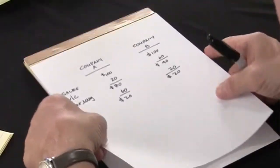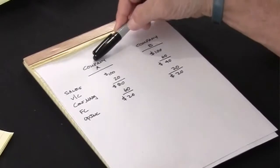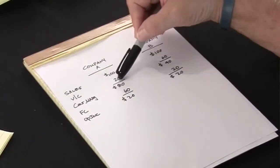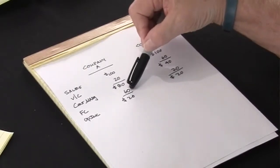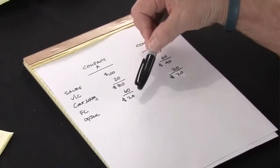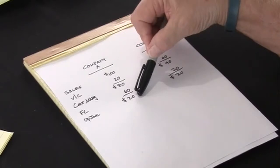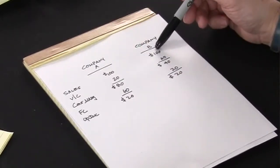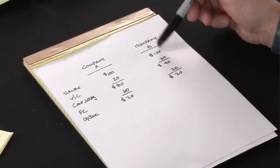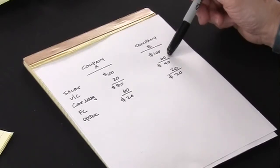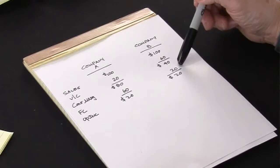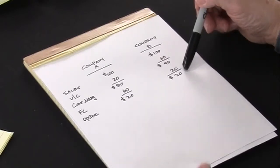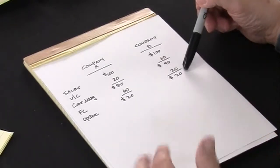For example, I've got two companies here. Company A sells $100 worth of product, of which $20 of their costs are variable, yielding a contribution margin of $80 with a fixed cost of $60, and its operating profit is $20. Similarly, Company B sells $100 worth of product, $60 worth of variable cost, $40 of contribution margin. Its fixed costs are only $20, and therefore its profit level is also $20.